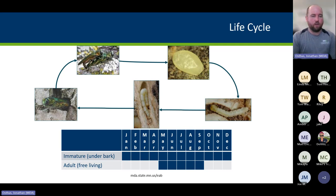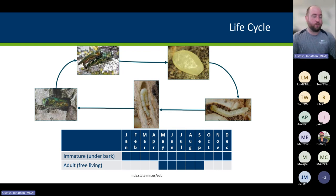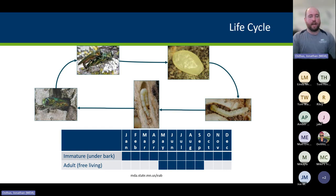Emerald Ash Borer has a one-year and a two-year life cycle in Minnesota. The further north you go with the shorter growing season, the more two-year life cycles you tend to have. For example, an egg laid in summer 2023 hatched and the larvae made it partway through development before going dormant for winter. The next spring it will finish larval development, overwinter a second time, then emerge as an adult beetle in summer 2025. This means you can have any stage of immature larvae underneath the bark at any time of year, which is an important feature when thinking about transporting firewood.